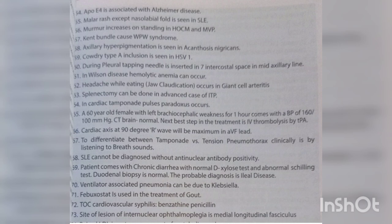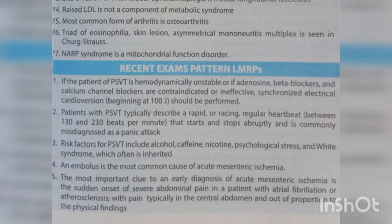Ventilator-associated pneumonia can be due to Klebsiella. Febuxostat is used in the treatment of gout. Treatment of choice for cardiovascular syphilis is benzathine penicillin. Site of lesion in internuclear ophthalmoplegia is the medial longitudinal fasciculus. Raised LDL is not a component of metabolic syndrome. Most common form of arthritis is osteoarthritis. The triad of eosinophilia, skin lesion, and asymmetric mononeuritis multiplex is seen in Churg-Strauss disease. NARP syndrome is a mitochondrial function disorder.